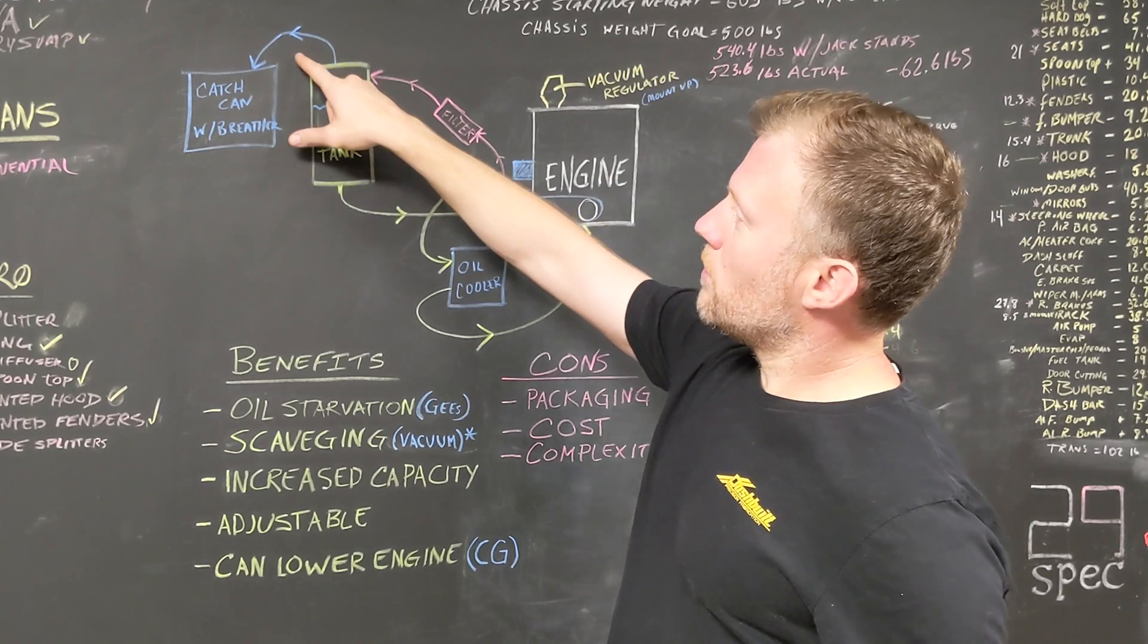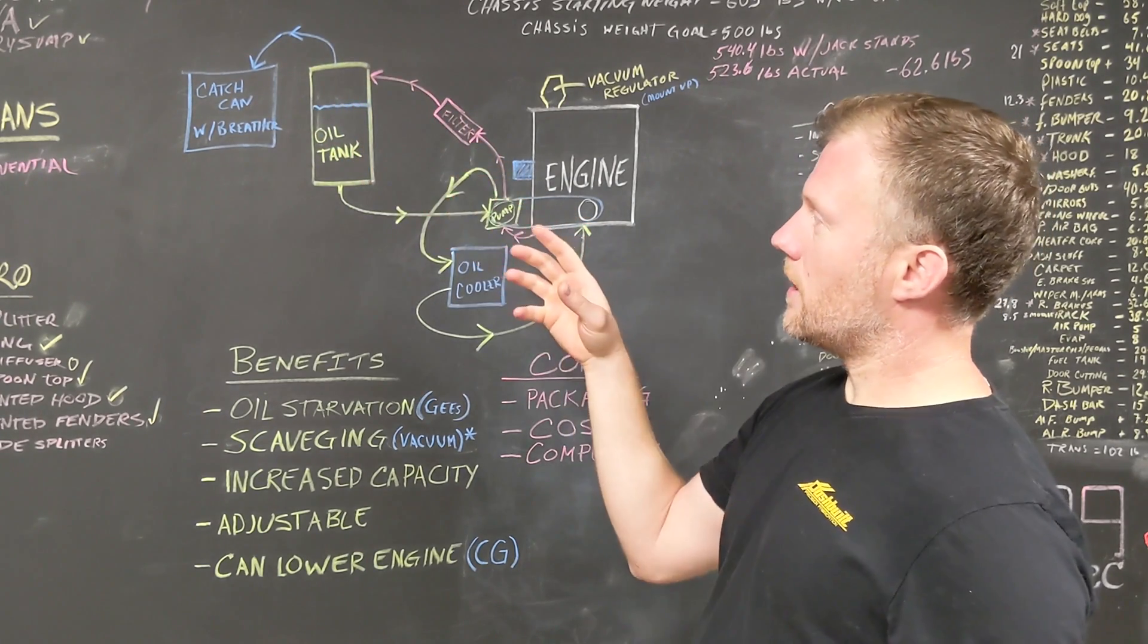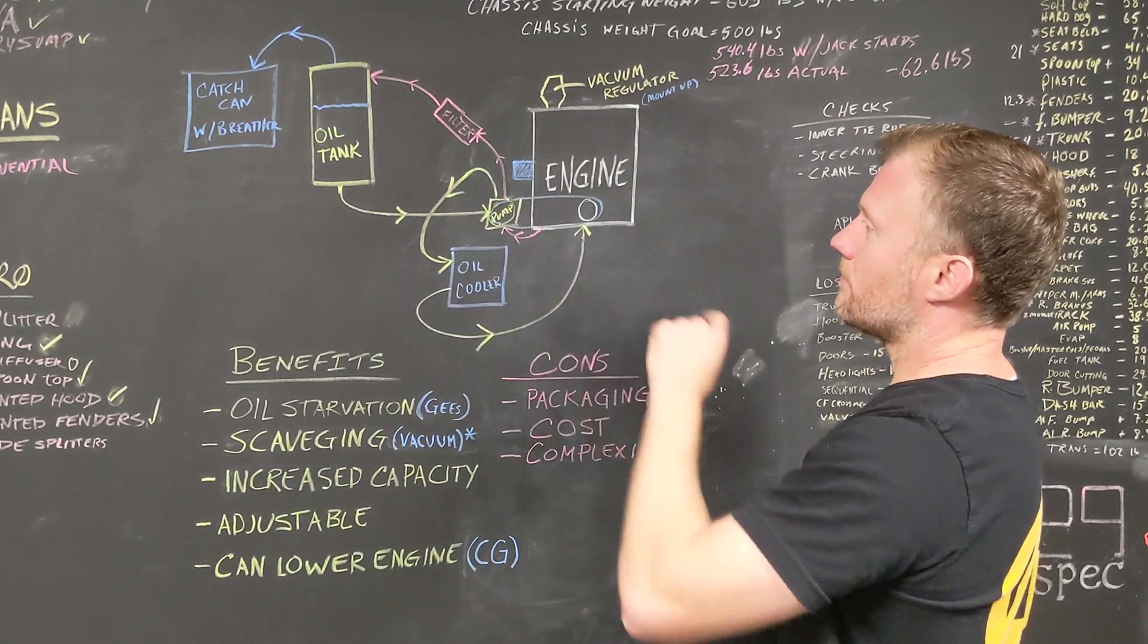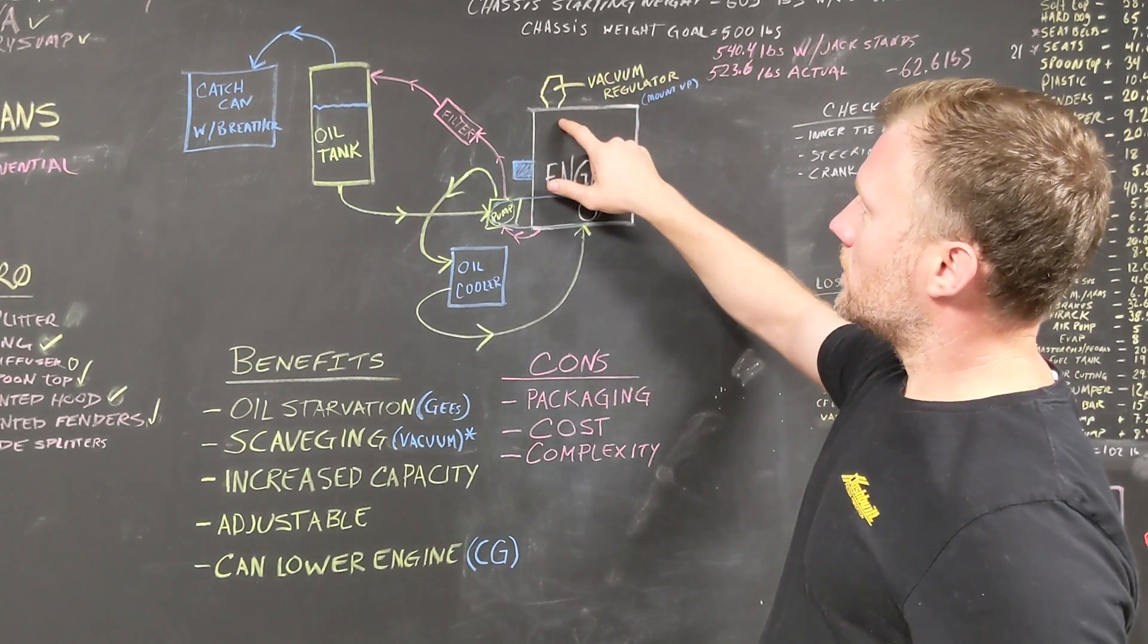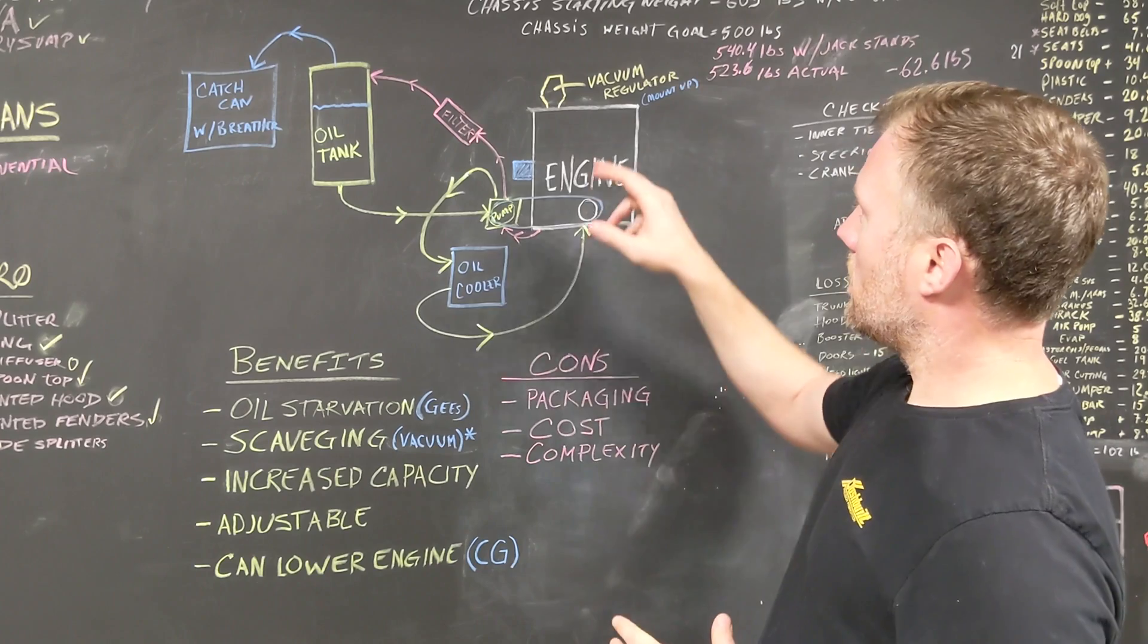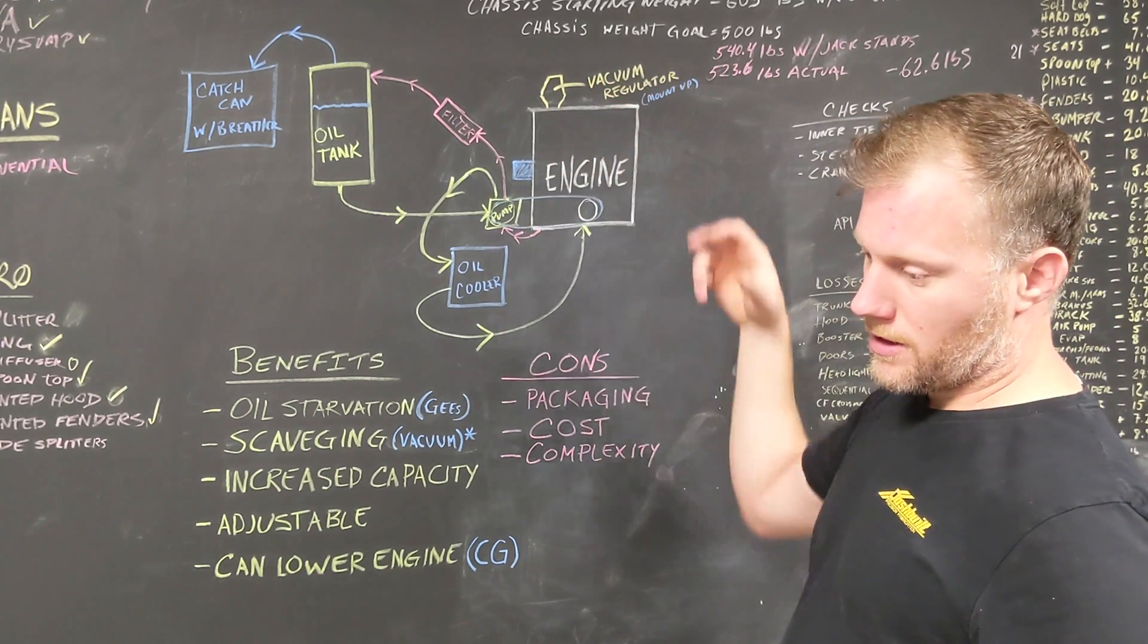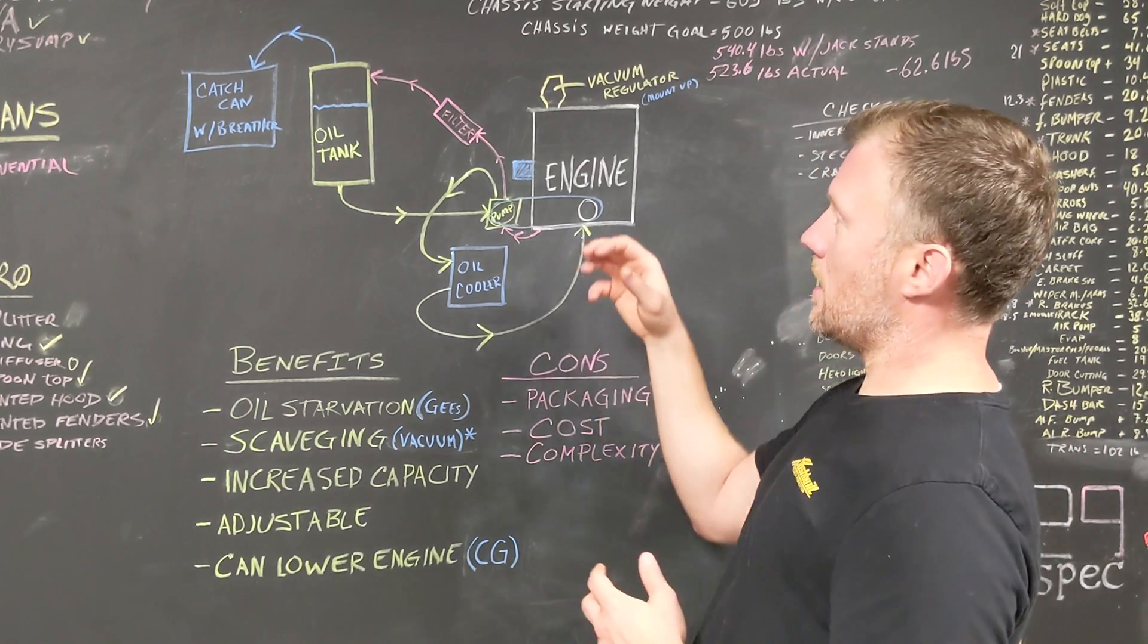And then, so off of the oil tank, you will have a catch can breather with a breather. And that just catches any blow by or whatever in the catch can. So on my car, since it's NA and there won't be a ton of blow by, I will be using a vacuum regulator on the valve cover. And like I said earlier, this just makes sure I'm not getting too much vacuum and damaging my seals.